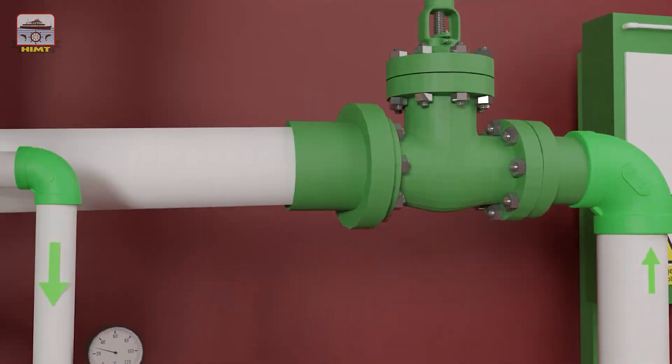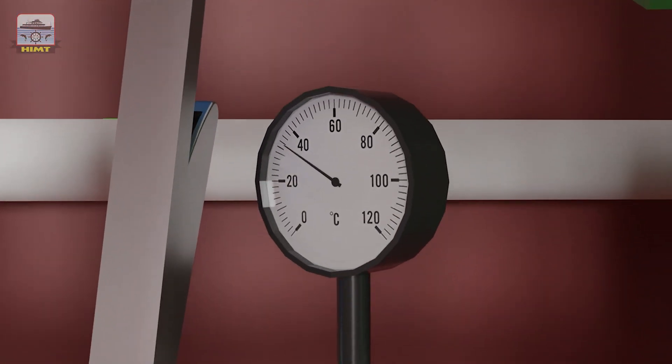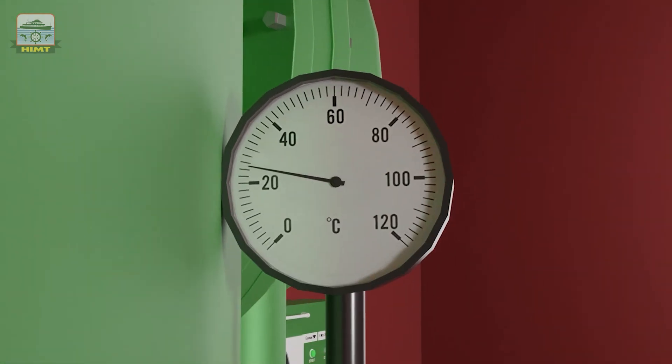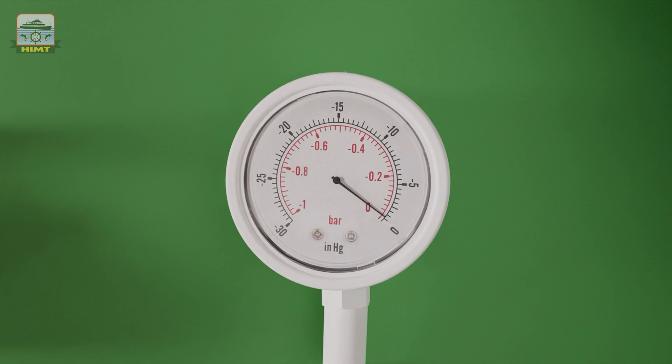We also have thermometers installed at the inlet and outlet of the jacket water, allowing for temperature monitoring and control during the distillation process. This thermometer on the shell measures the temperature of the generator shell, providing insights into its overall thermal conditions. This vacuum gauge on the shell indicates the level of vacuum within the generator, ensuring it remains within the required range.